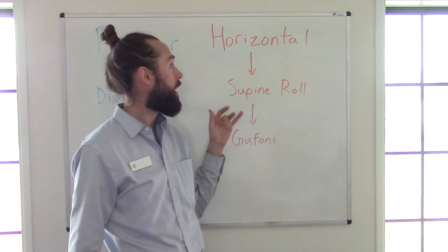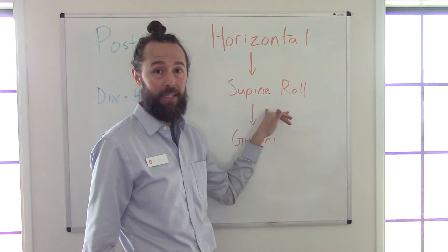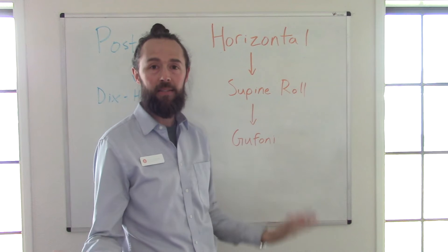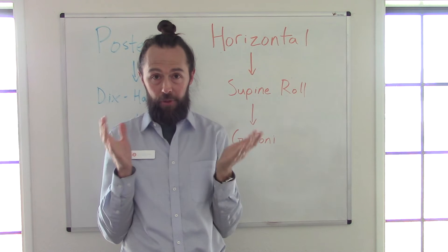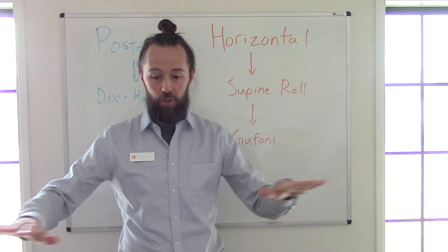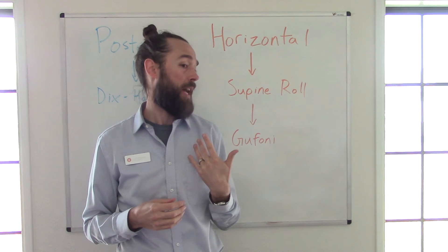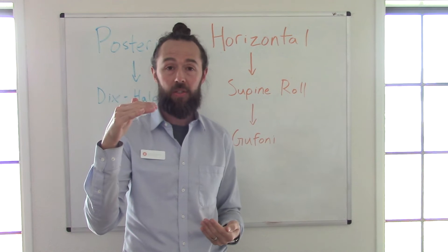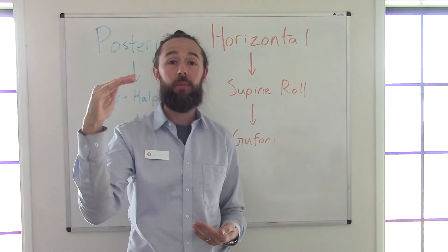For horizontal canal, you're going to do the supine roll test. Sometimes as a clinician I'll do that first before Dix-Hallpike just to rule out horizontal canal. The supine roll test is simple: you lay on your back with your head elevated forward about 30 degrees, then roll your head all the way to one side and then all the way to the other side. A positive test is that the eye nystagmus direction is purely side to side — not torsional, not beating up or down, just straight side to side.